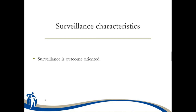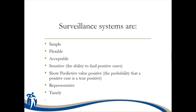Surveillance characteristics: surveillance is always outcome-oriented. Surveillance systems have to be simple — as simple as you can get them. Flexible, so you can adapt to change. Acceptable to the people who have to use it. And sensitive — in other words, you have to be able to find the cases that you're looking for.